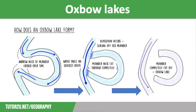At times of high discharge, for example in a flood or after a storm, the river has more energy so it erodes a new channel straight across the neck of the meander. This becomes a shortcut which the river will now use because it is easier, even when the water level goes down. This new channel then becomes the main channel as lateral and vertical erosion make it deeper and wider.